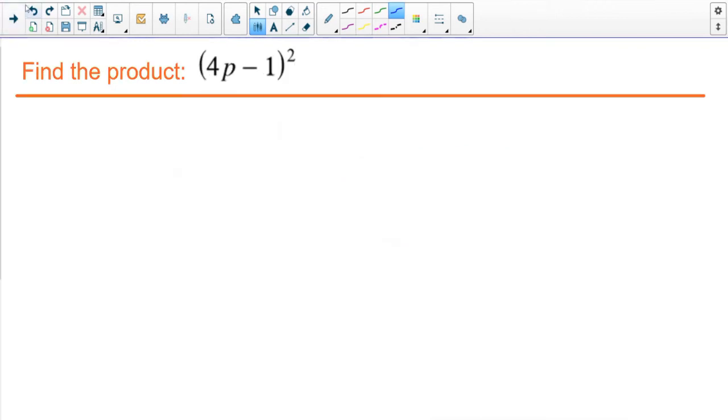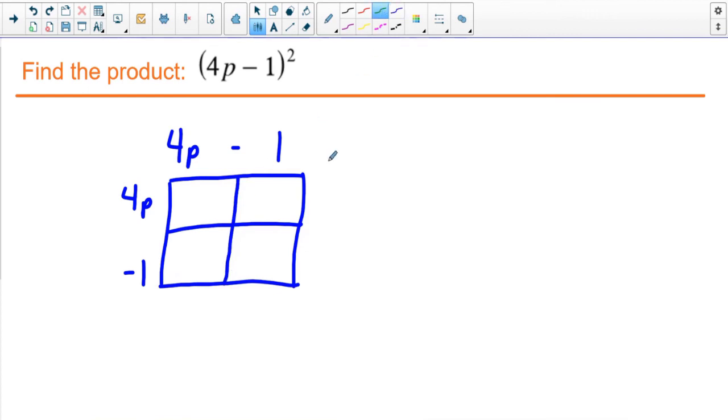Let's try another one. Find the product 4P minus 1 squared. So this is just 4P minus 1, both of these binomials are going to be 4P and minus 1. And we'll go ahead and multiply these. So 4P times 4P is 16P squared. 4P times negative 1, that's going to be negative 4P. Same thing for this one, 4P times negative 1, that's negative 4P.